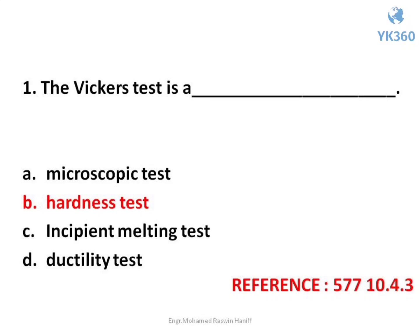Question number 1. The Vickers test is — options are: A. Microscopic test, B. Hardness test, C. Incipient melting test, D. Ductility test. Answer is option B. Hardness test.